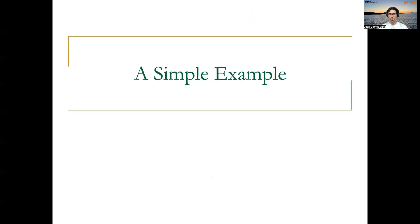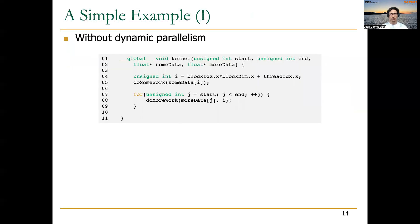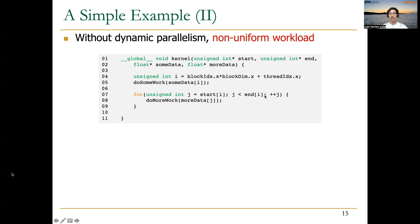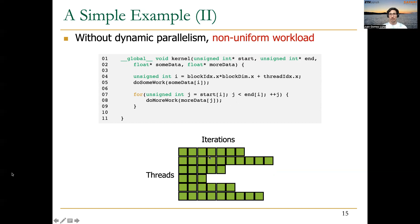To see how to use CUDA dynamic parallelism, let's start with a simple example. Here is a synthetic kernel that needs to do a certain amount of work per thread in a for loop from lines 7 to 9. This is an implementation without dynamic parallelism. As long as the start and end values are the same for all threads, the number of iterations will be the same, so there are no load balancing issues. However, if these start and end values differ per thread, we get a different number of iterations per thread, causing load imbalance and hampering performance.